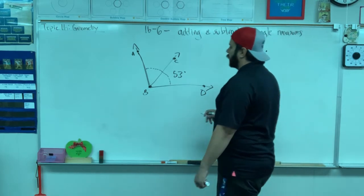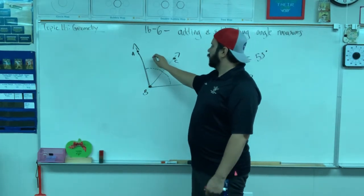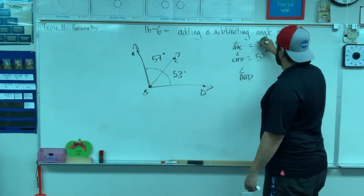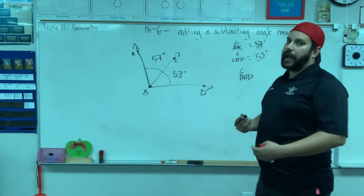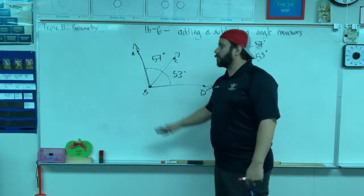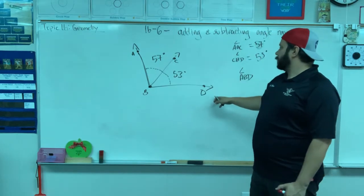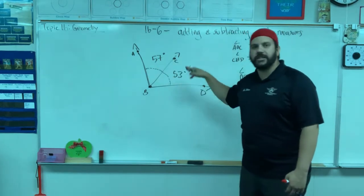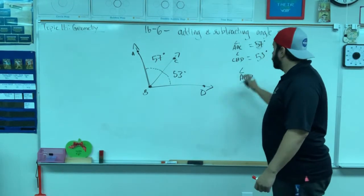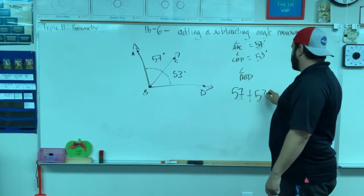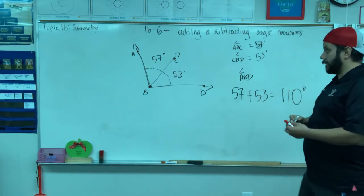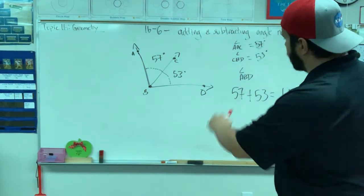So here is A, B, C, and D. I don't know the main angle, but let's say I know that CBD is 53 degrees, and let's assume that we know ABC is 57 degrees. How do I figure out ABD? Well, both of these angles combined make angle ABD, so it's just a simple matter of adding the two: 57 plus 53 equals 110 degrees.